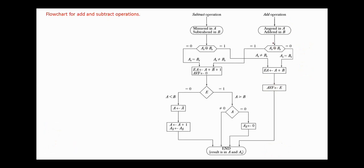On the add operation, if the signs are not equal, one of the two numbers is negative. So we add A to the two's complement of B, and this is equivalent to A minus B. And we check the E flip-flop. If the E flip-flop is one, this means that A is greater than or equal to B. In this case, we check if A is zero, then AS is set to zero, and if A is not zero, we are done. However, if the E flip-flop is zero, then A is less than B, and we have to obtain the two's complement of A. First, we complement A, then we add one to the one's complement of A. And the sign remains the same.